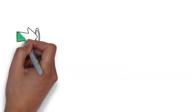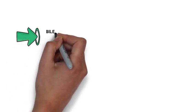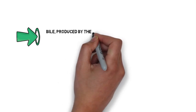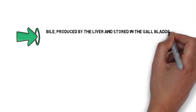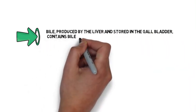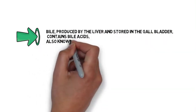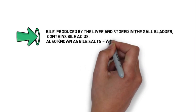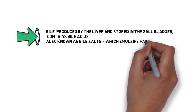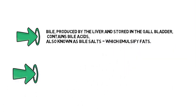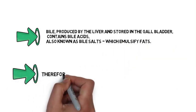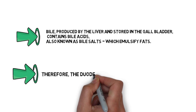Bile produced by the liver and stored in the gallbladder contains bile acids, also known as bile salts, which emulsify fats. Therefore, the duodenum is a site of digestion.